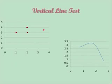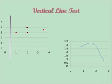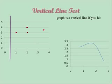Vertical line test. When we have a graph, we can easily tell if it's a function or not by using the vertical line test. The vertical line test says that you take a vertical line and draw it, then pass it over your graph. If you hit more than one point as you pass the vertical line over your graph, it's not a function. A graph is a function if you hit only one point as you pass the vertical line over the graph.